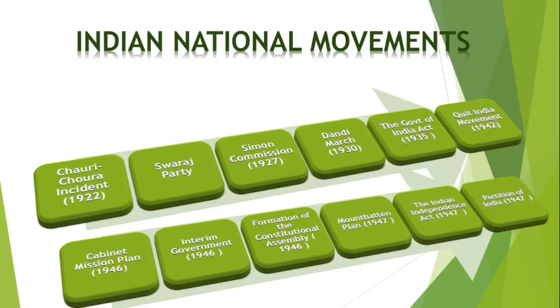The next is the Formation of the Constituent Assembly, 1946. The Constituent Assembly met on December 9, 1946, and Dr. Rajendra Prasad was elected its President. The Muslim League didn't join the Assembly.